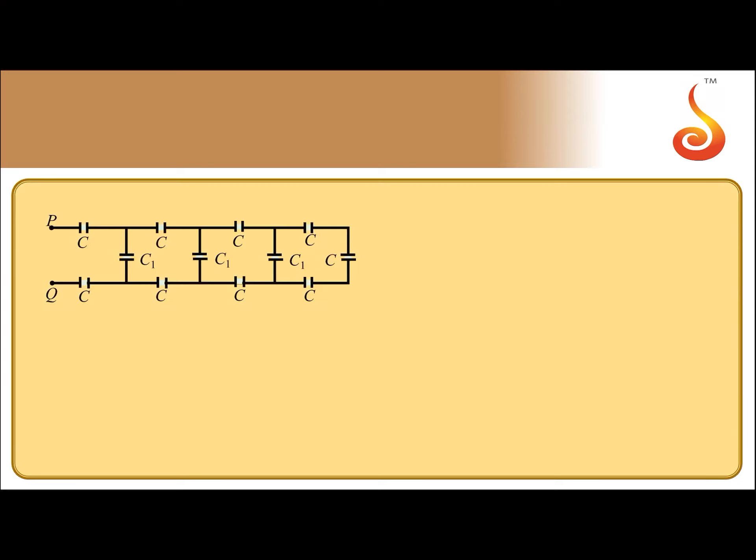So, it is given C is 9, so this is 9, this is 9, this is 9. Start from the right side end between these two terminals. If you consider 9, 9, 9 are in series, effective of all the three will be 3. Three identical capacitors in series, effective will be C by 3, so that will be 3.